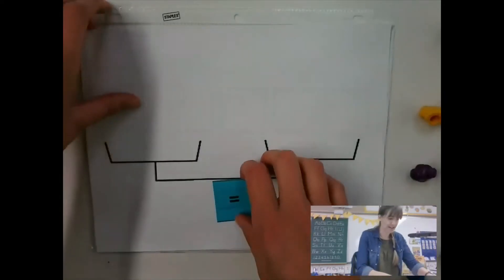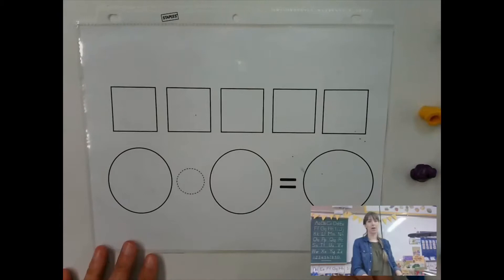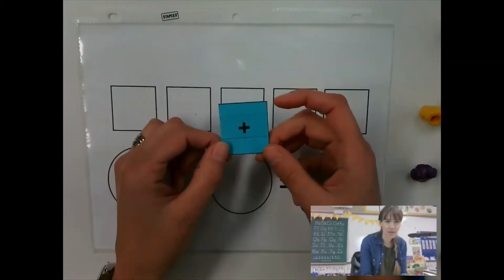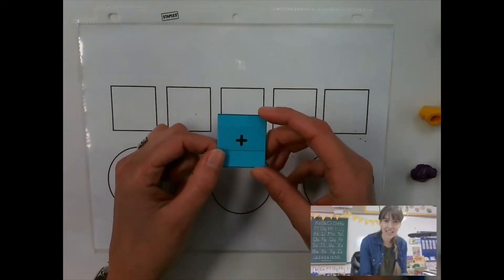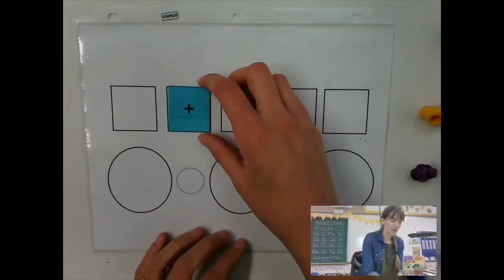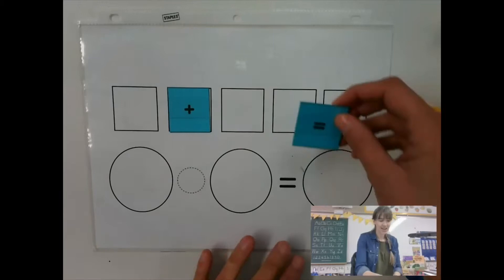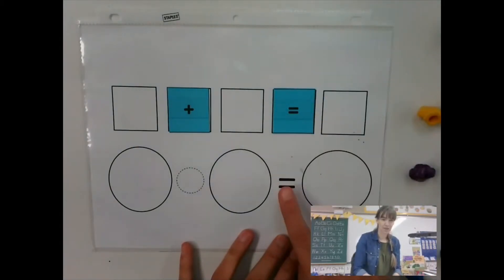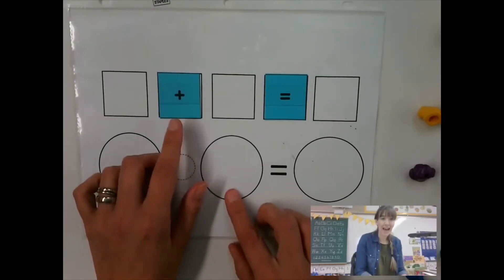Now we are going to start to talk about the plus sign. I'm sure you've seen this before. The plus sign is when we put groups together. So I'm going to put that right here and put my equal sign above where the circles are. Adding is when we take two groups and we put them together.